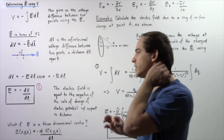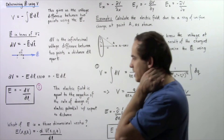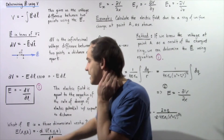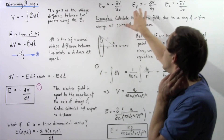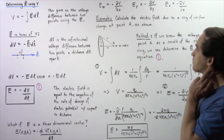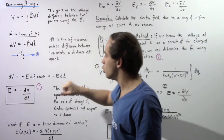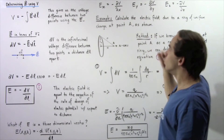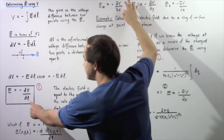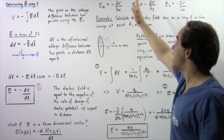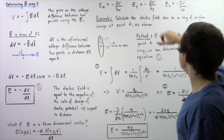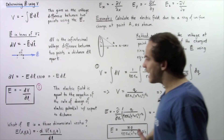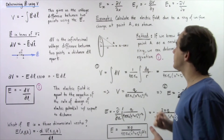What if our electric field is a three-dimensional vector? Then the electric field depends on three different distances: the x distance, the y distance, and the z distance. That means we get three partial differential equations. The electric field component along the x axis equals the negative of the partial derivative of the voltage with respect to x, and we simply replace l with the relevant axis distance. The same applies for the y and z components. So let's apply this equation with the following example.